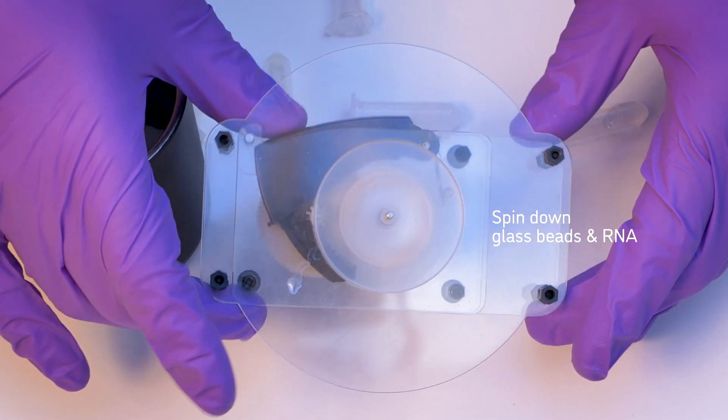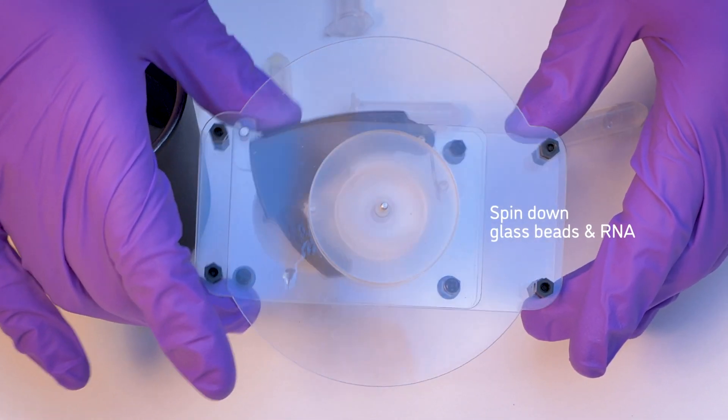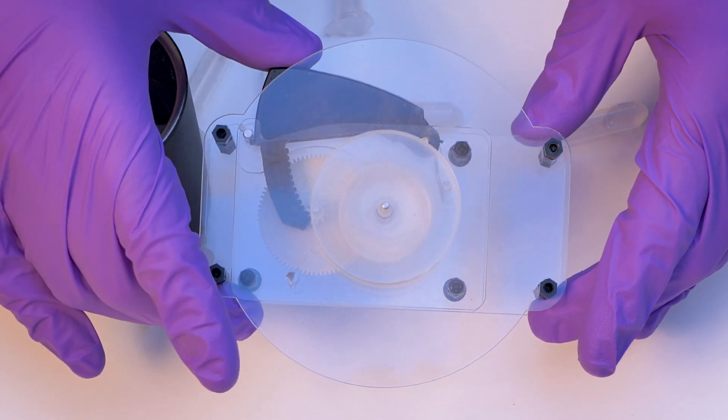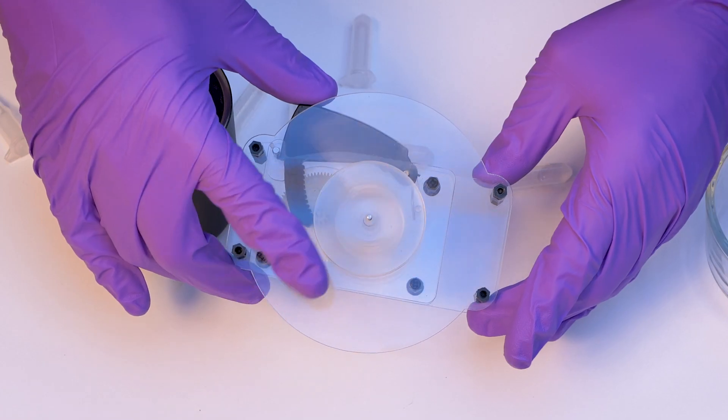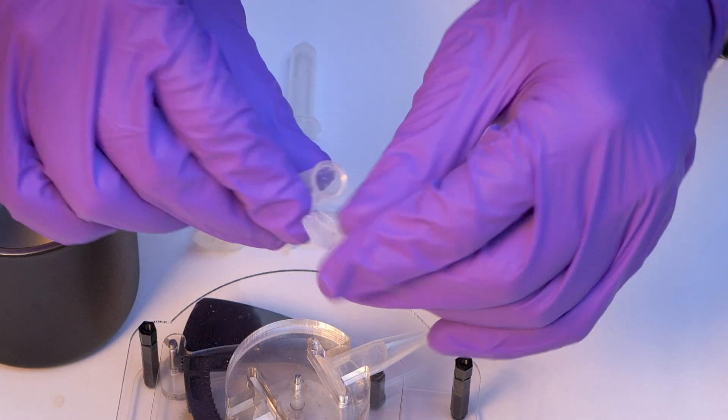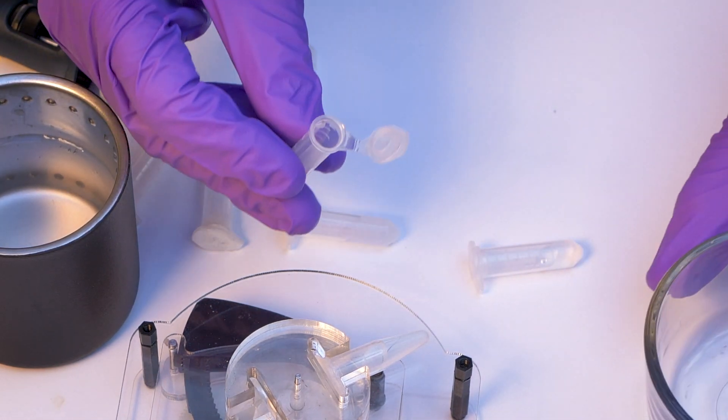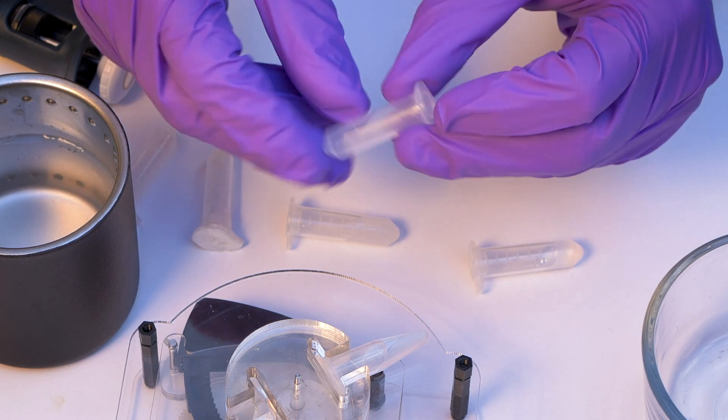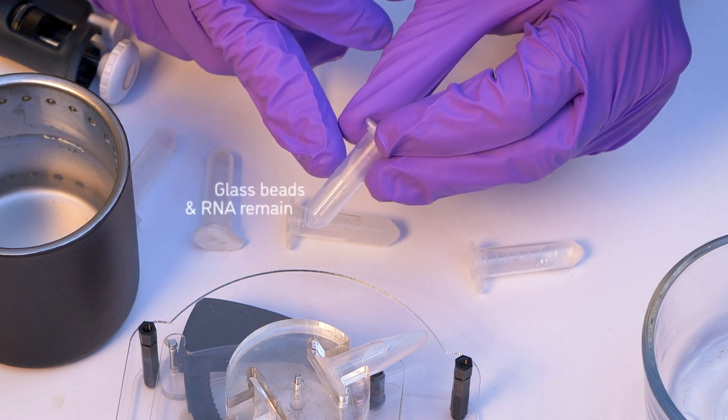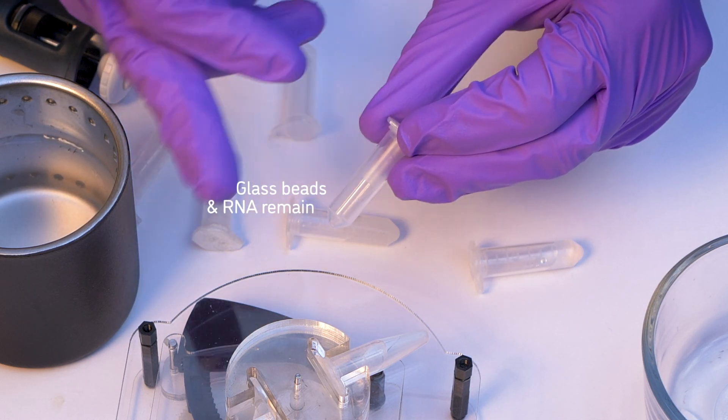And now what we want to do is spin this down so the glass beads will be at the bottom. So at this point, we could simply pour this off. And so now what we have is just the glass beads, which will have the viral RNA, if present, and they're stuck to the bottom of the tube.